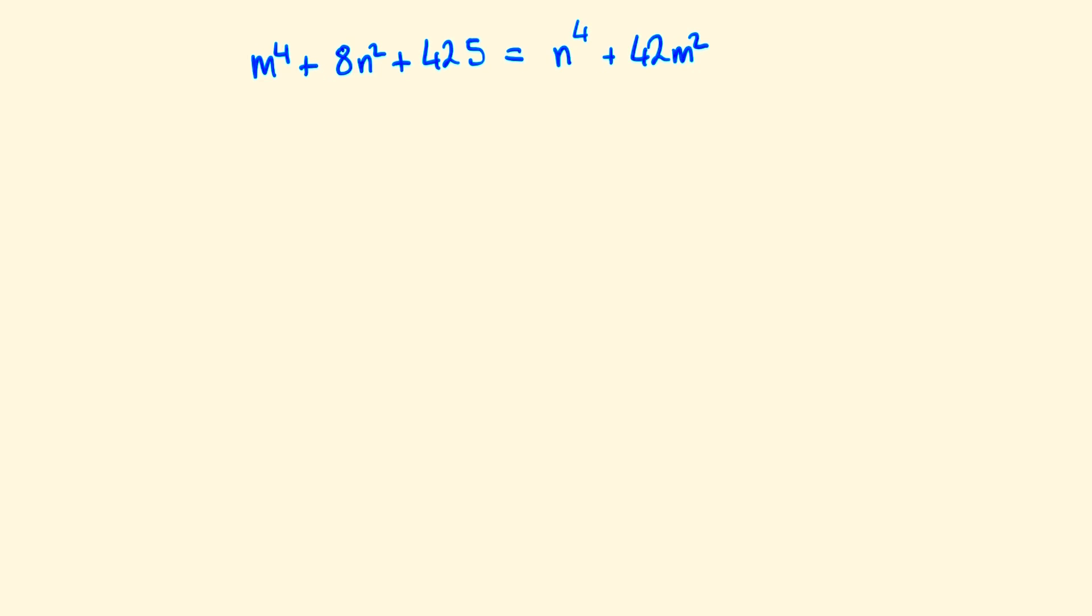We can start solving this problem by collecting the m's and the n's onto one side, so writing this as m^4 - 42m^2 + 425 = n^4 - 8n^2.